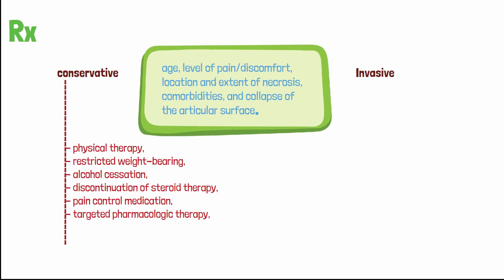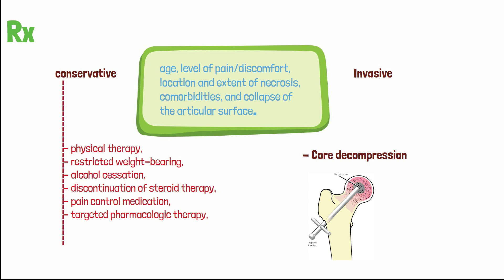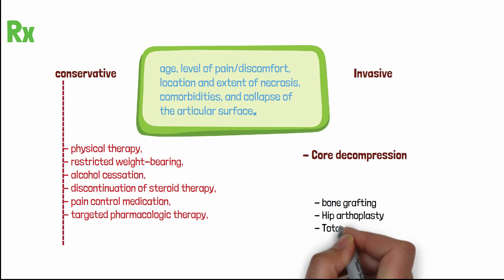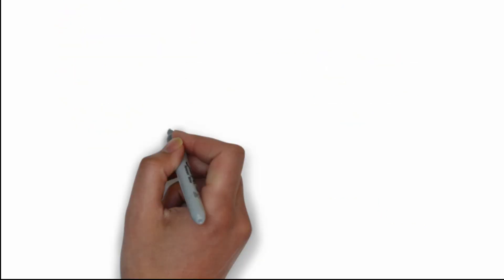Surgical options include core decompression, which is the drilling into the femoral head to remove affected tissue, decreasing pressure and increasing perfusion — the most common intervention during the pre-collapse stage. Cell therapy has been used as an adjunct to core decompression and has been reported to be safe with improved clinical outcomes and lower disease progression rates than core decompression alone. Other options include bone grafting and hip arthroplasty or total hip replacement. The choice depends mainly on the stage of the disease.